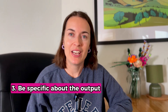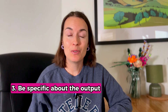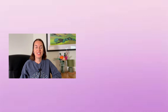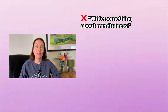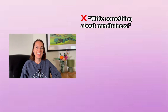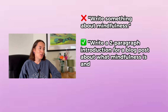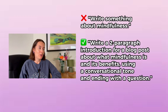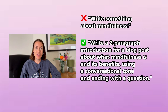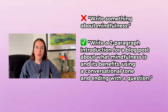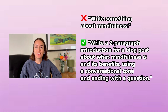Tip number three: be specific about the output you're looking for. Don't just say 'write something about mindfulness.' Say this instead: 'Write a two-paragraph introduction for a blog post about what mindfulness is and its benefits, using a conversational tone and ending with a question.' So you've told the AI the format, tone, length and topic, which means the result will be much more tailored.